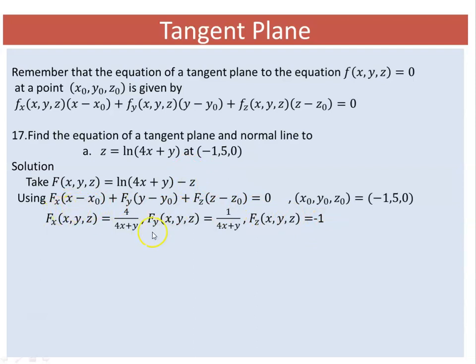Now using the formula, we substitute into the tangent plane equation at the point (-1, 5, 0). We have: fₓ(x - x₀) + fᵧ(y - y₀) + fᵤ(z - z₀) = 0, which becomes: 4/(4x + y)(x - (-1)) + 1/(4x + y)(y - 5) + (-1)(z - 0) = 0.